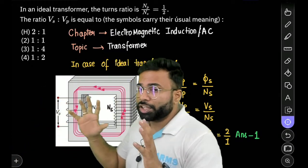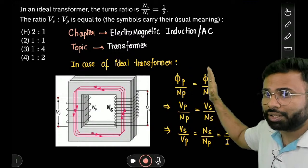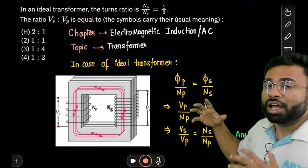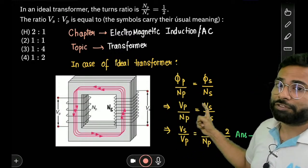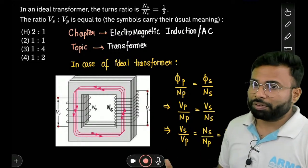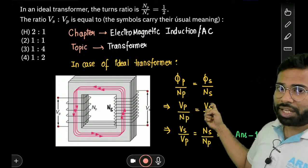If we differentiate this with respect to time, these two are constant. We know that we will get EMF, induced EMF. Right? In that place I have Vp and Vs. Right?